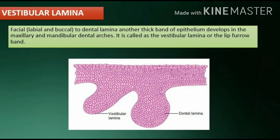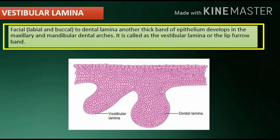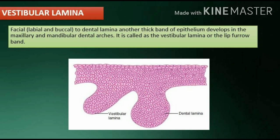Vestibular lamina: Facial, labial, and buccal to the dental lamina, another thick band of epithelium develops in the maxillary and mandibular dental arches. It is called the vestibular lamina or the lip furrow band.